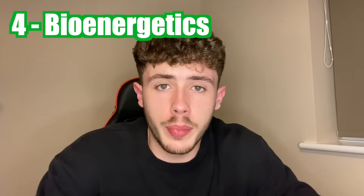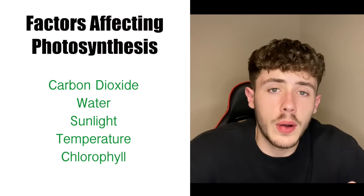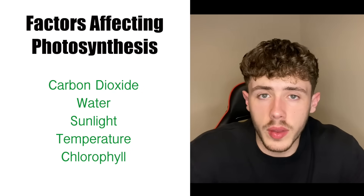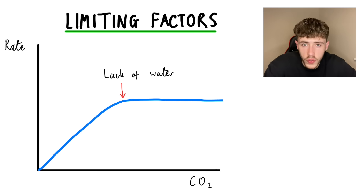Topic number four is bioenergetics — essentially photosynthesis and respiration. Starting with photosynthesis, the most important thing is the equation. Remember this as a minimum and you should be okay, because you can use the equation to work out the factors that affect photosynthesis. For example, if a plant has more carbon dioxide and more water, it will usually perform photosynthesis better, at a quicker rate and for longer. However, it also needs good temperatures, good sunlight and a good amount of chlorophyll. If one of these things is missing, it is called a limiting factor and will hold back the rate of photosynthesis, because it cannot happen without all five of those things.